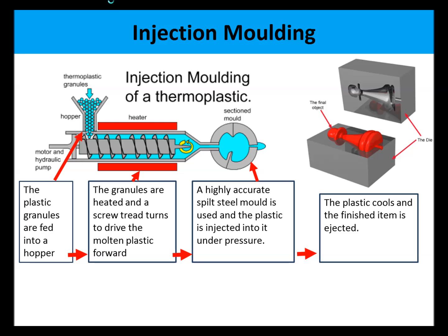Here's a simple diagram of injection molding. In the exam you may be asked to sketch a diagram like this. The stages are: plastic granules are fed into a hopper; the granules are heated and an Archimedean screw turns to drive the granules forward past the heaters; the heaters turn the plastic granules into a molten state; then the hydraulic pump pushes forward and the molten plastic is injected into a split steel mould; the plastic then cools and the item is ejected.